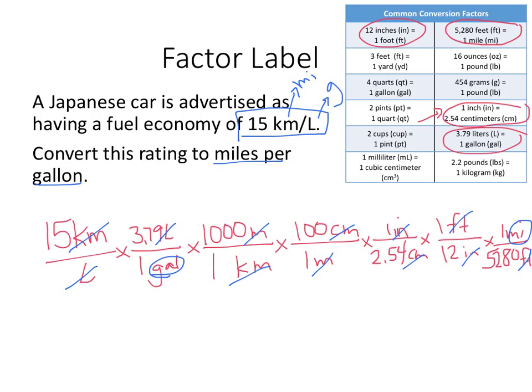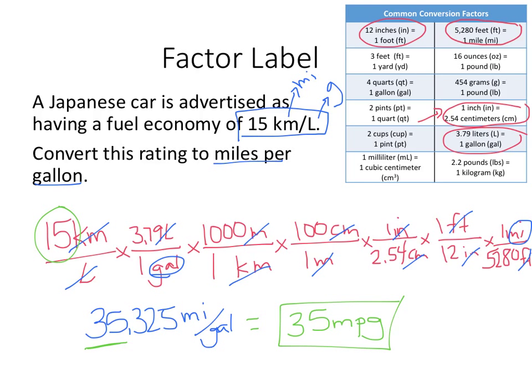So my final answer, 15 times 3.79 times a thousand times a hundred divided by 2.54 divided by 12 divided by 5280 gives me 35.325 miles over gallons. Since my original number has two significant figures, I only want two significant figures, so let's convert that to 35 MPG. That's a pretty good fuel economy.